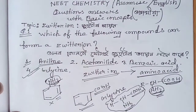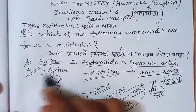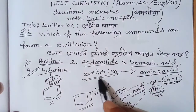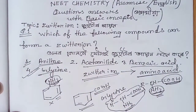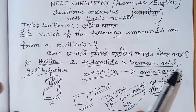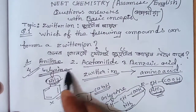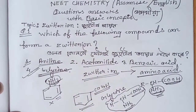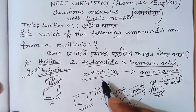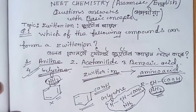Glycine has the structure of an amino acid. Glycine is a type of amino acid. Like benzoic acid and aniline, we compare glycine — glycine is a high amino acid. You can see the amino acid structure of glycine clearly.